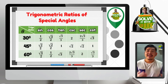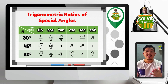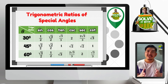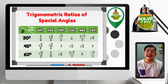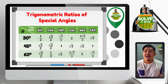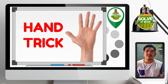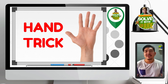So, how can we memorize this table? If you can see, this table consists of sine, cosine, tangent, cosecant, secant, and cotangent, as well as the angles 30, 45, and 60 degrees. There is too much to memorize. So there is a trick we can use to get the exact value of special angles in trigonometric ratios.